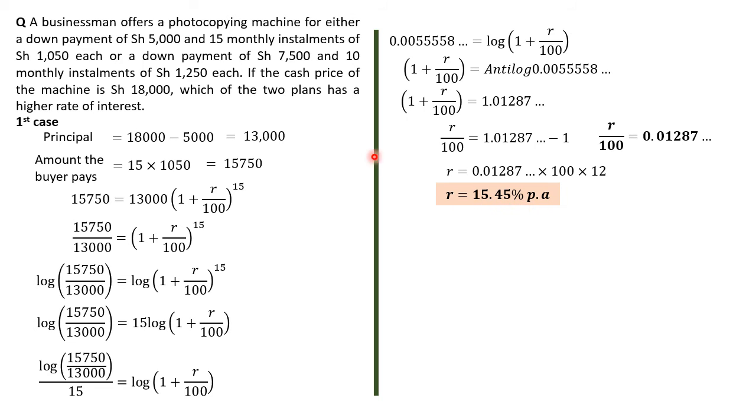Therefore, if someone chooses to pay for the machine using the first case, paying $5,000 down payment and 15 months of installments, that person will end up paying a compound interest of 15.45% per annum. That is the first case.